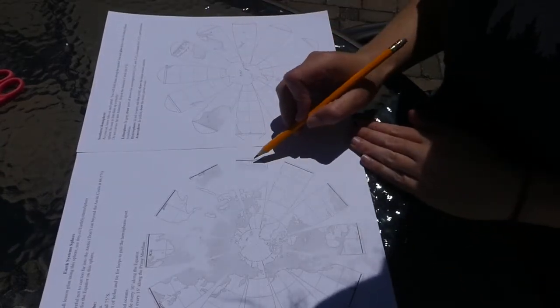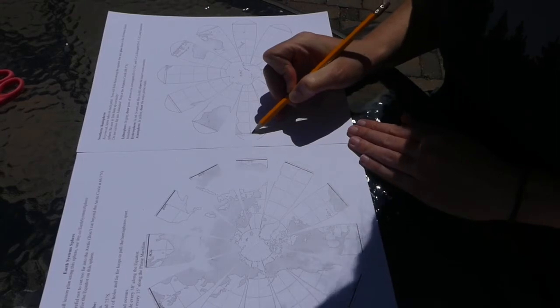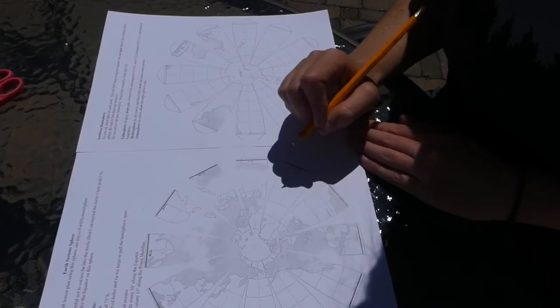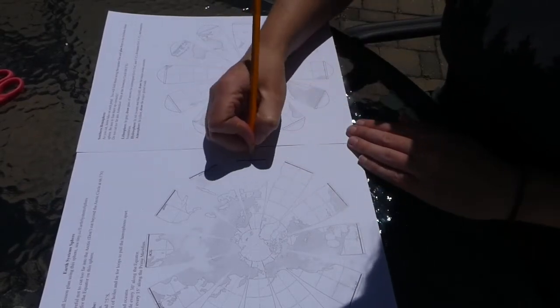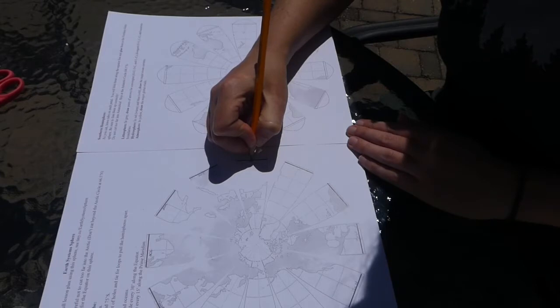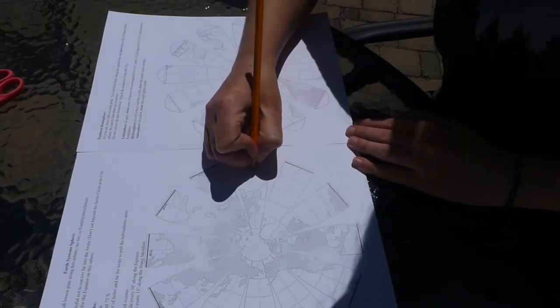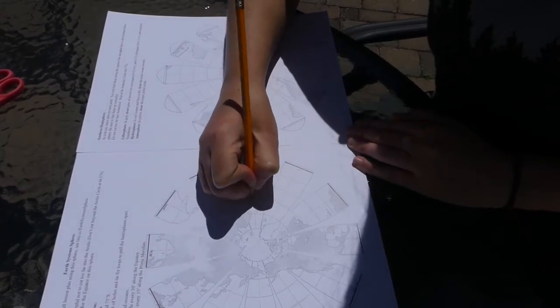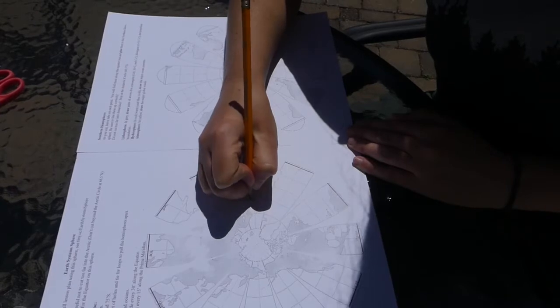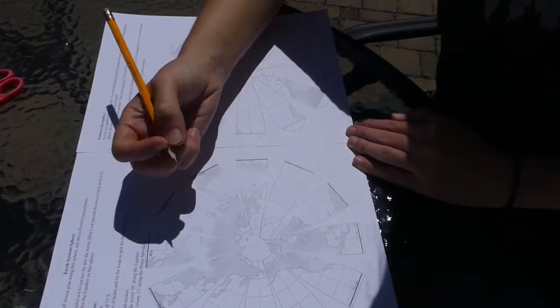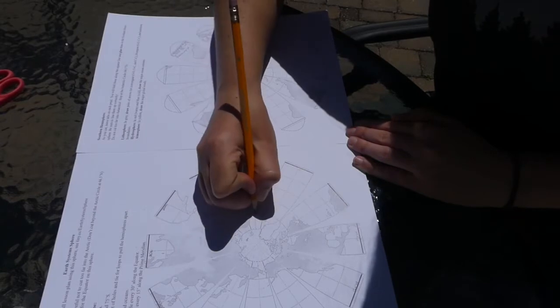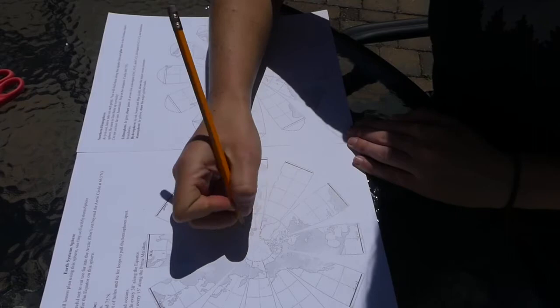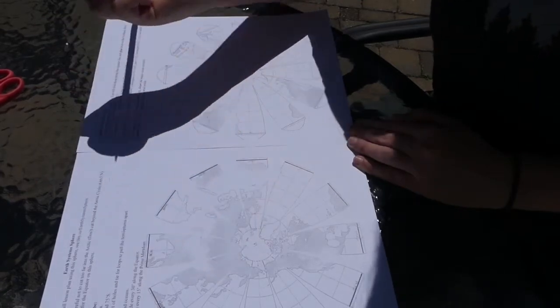Now because the equator is going to be the same all the way around, we don't need to label it on the southern hemisphere, but we do need to label our degrees of latitude. For our degrees of latitude we're going to go every 15 degrees starting again at the equator. So we have 15 degrees north, 30 degrees north, 45 degrees north, 60 degrees north, 75 degrees north, and then the north pole is our 90 degrees north.